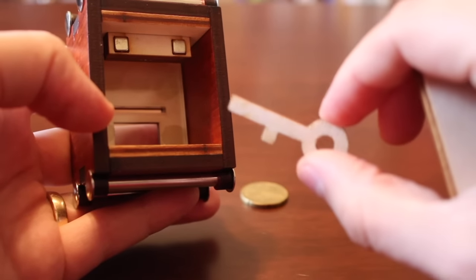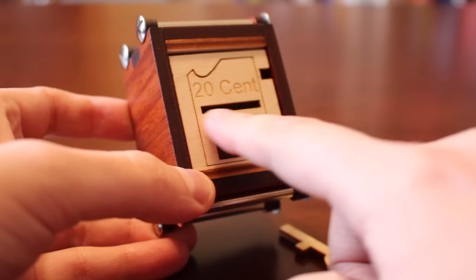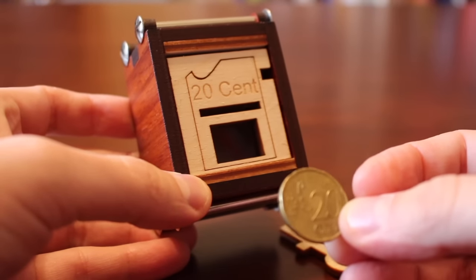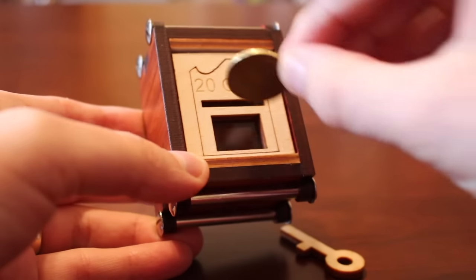But weak enough that a gentle push down with the key brings the bottom off of the box. And the reason this slot is here is in case you forgot to put the coin back in when you reassembled the puzzle. Without that slot, the puzzle would be unopenable.